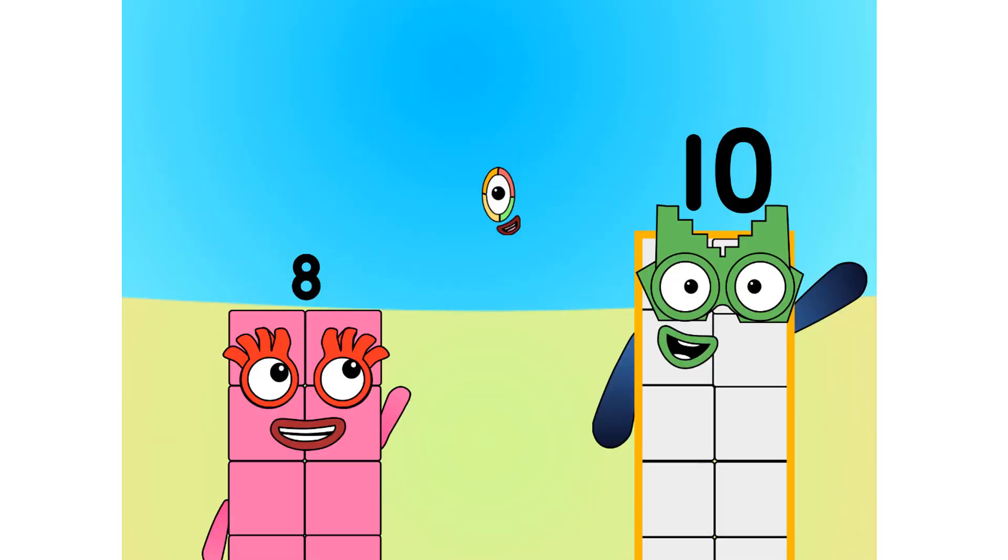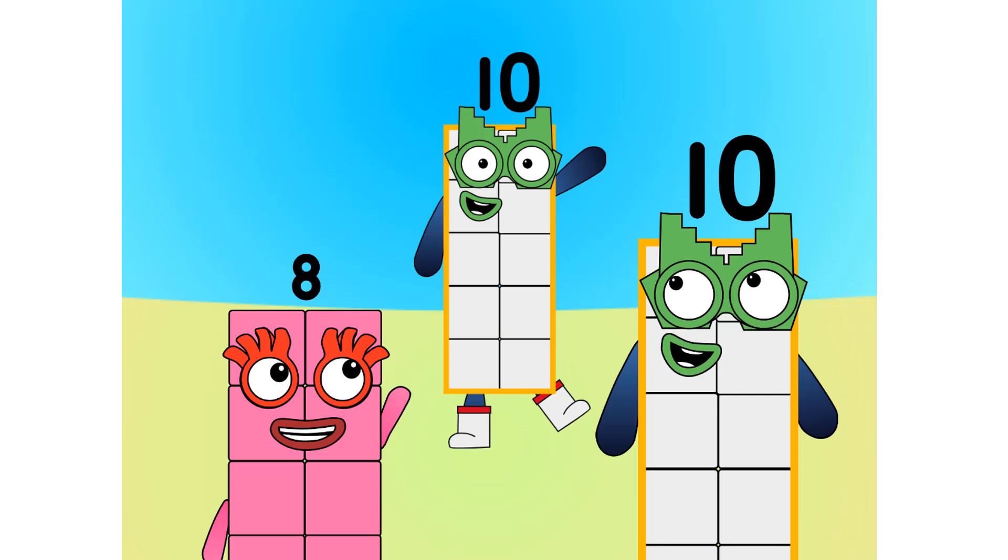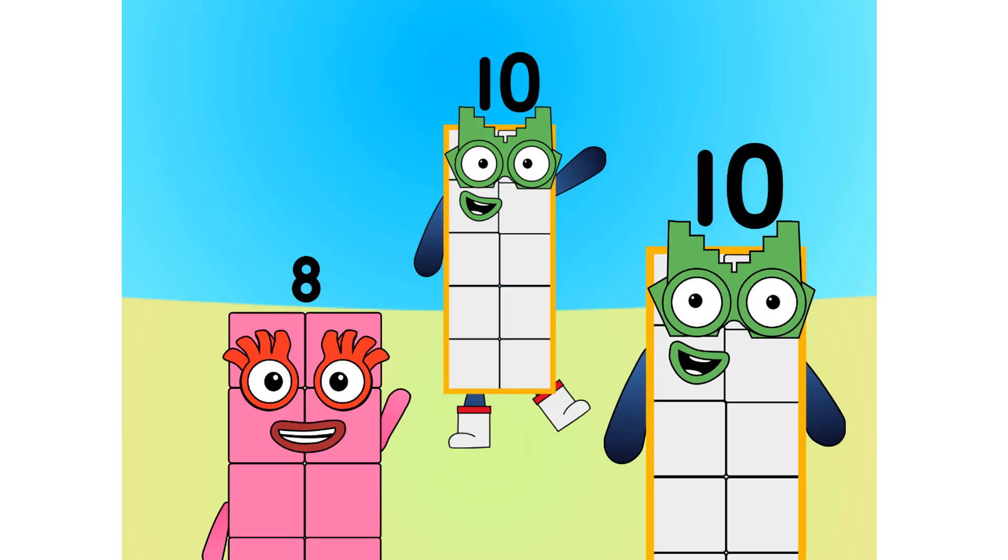8, do you know why we count up to 10? The main reason why we count to 10 is because humans have 10 fingers, 5 on each of their two hands. 1, 2, 3, 4, 5, 6, 7, 8, 9, 10. See? 10 numbers, 10 fingers. Let me show you why we count in base 10 in a few different ways.